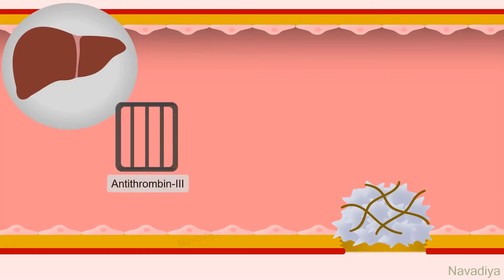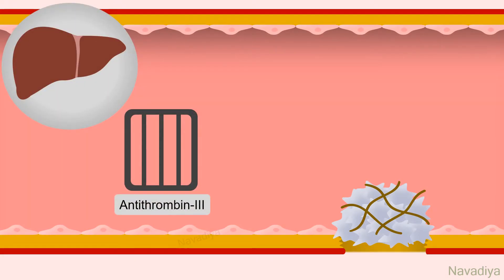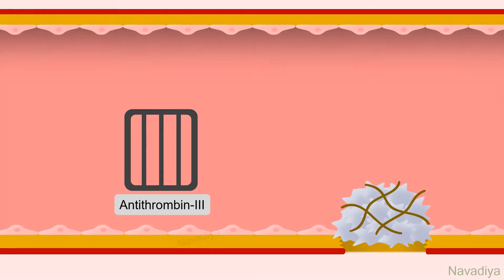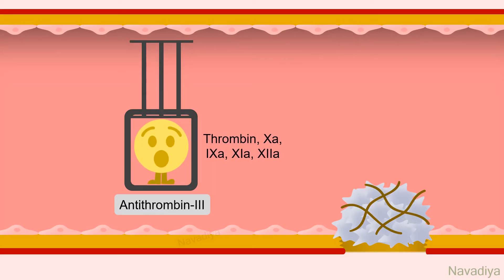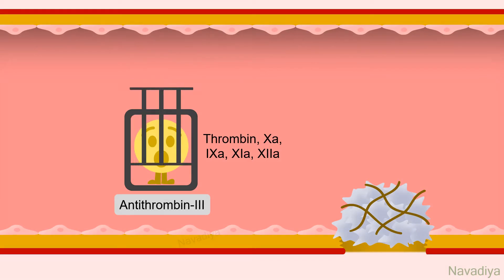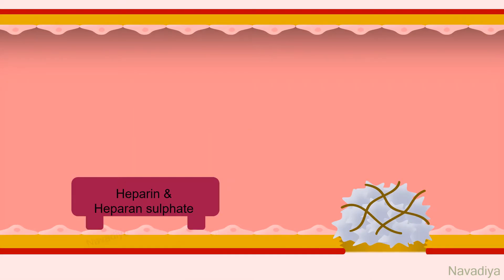Next is antithrombin-3. It is released from the liver. Thrombin and active factors 10, 9, 11, and 12 that leave the thrombus and enter into the circulation are inhibited by antithrombin-3.